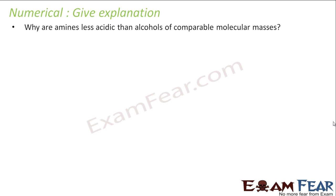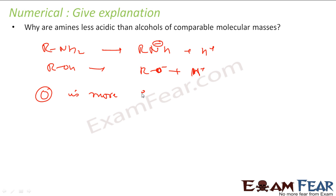The question is why are amines less acidic than alcohols? Let's compare. Let's assume both are acidic. I have RNH2, and if it's acidic it's expected to give a proton. I have ROH, if this is also acidic it's expected to give a proton. So ROH gives H+ and RO-, and RNH2 gives H+ and RNH-. If you see, here oxygen has negative charge, here nitrogen has negative charge. Oxygen is more electronegative than nitrogen.